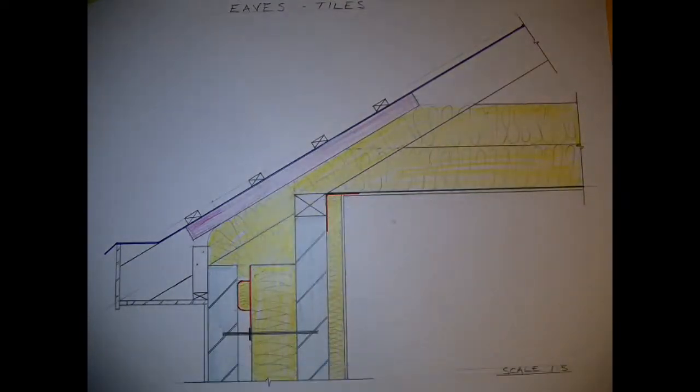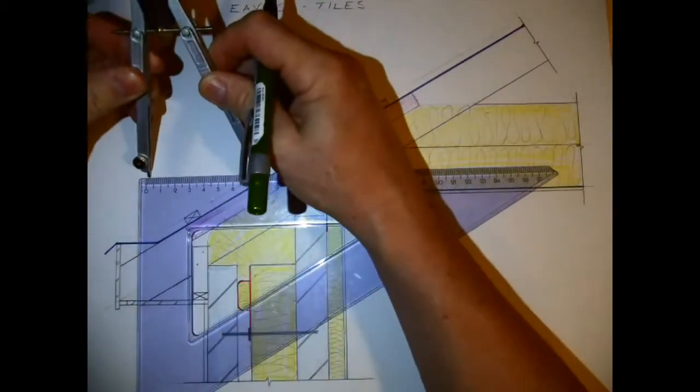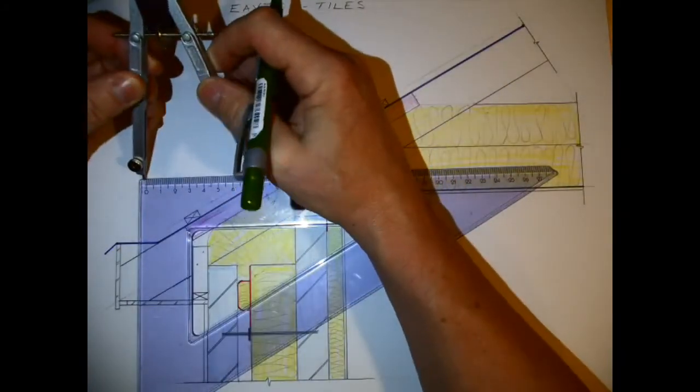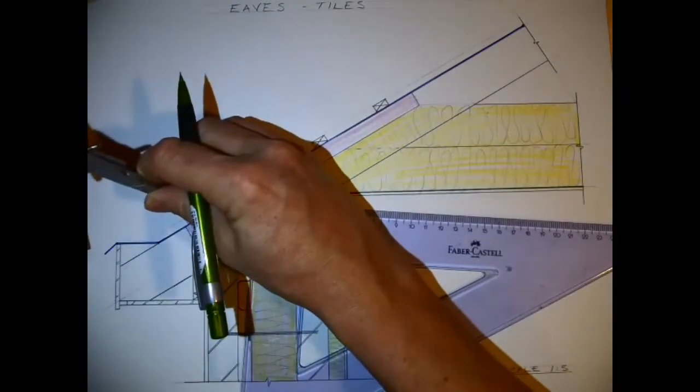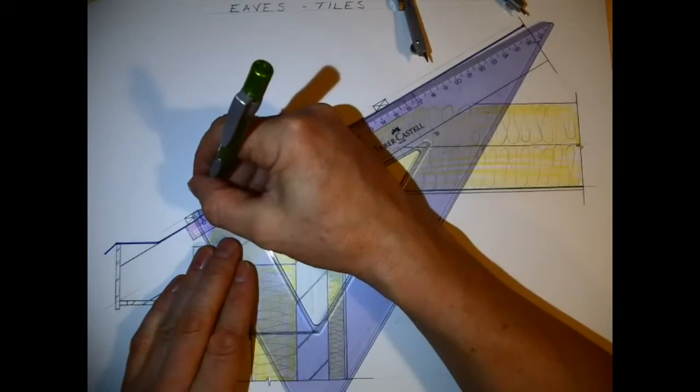There I have my battens spaced in: first to 300, the rest at 250 spaces. The reason for the first one being spaced at that there is to allow for the first tile to hang over the edge and allow the rainwater to run over into the gutter.